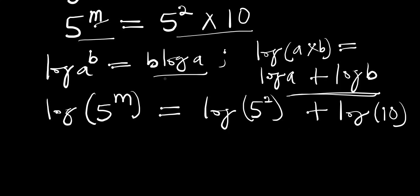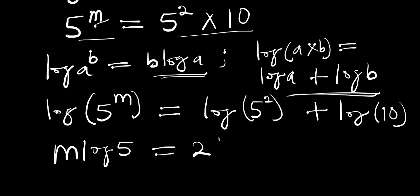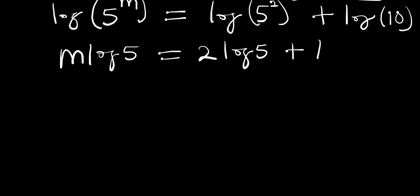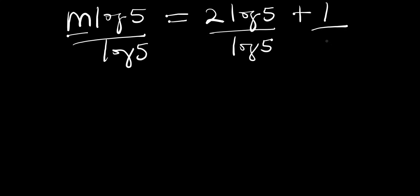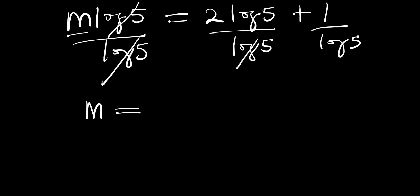Applying the power rule, we get m log of 5 equals 2 log of 5 plus log of 10, which is 1. To find m, we divide both sides by log of 5 — log of 5 cancels — giving m equals 2 plus 1 divided by log of 5.